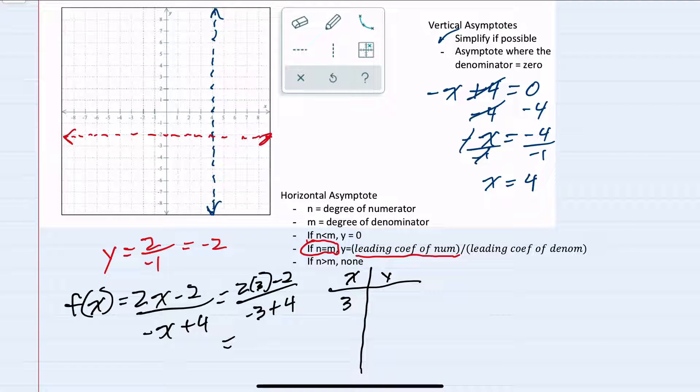So I can substitute in a 3 for our x. And then in the numerator, I can see I have 6 minus 2, which is 4. And in the denominator, negative 3 plus 4, which is 1. 4 over 1 is 4. Our first point here is (3, 4).